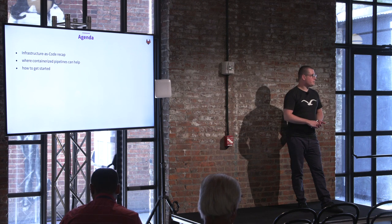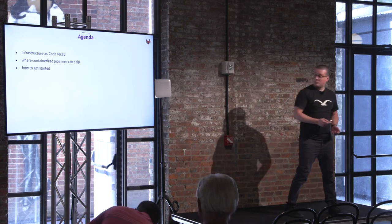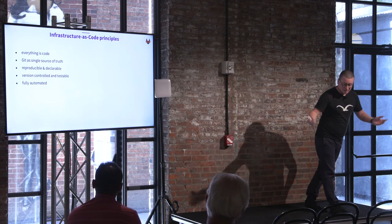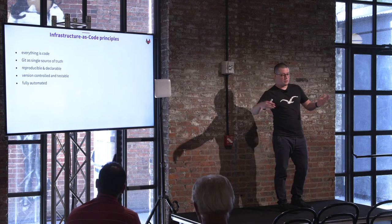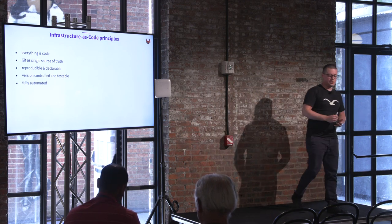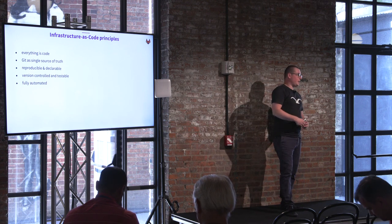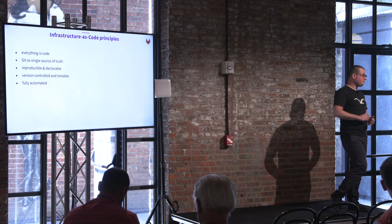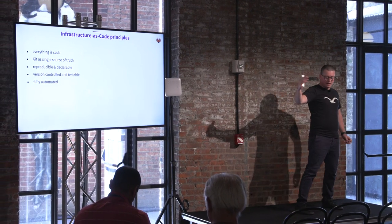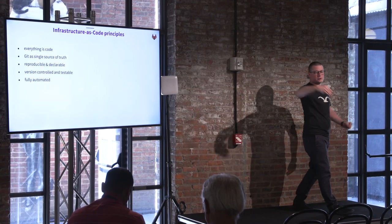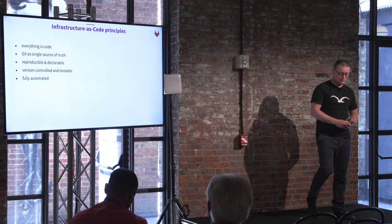Who of you is already using infrastructure as code? And Kubernetes? So we'll do the first slides pretty quick. Infrastructure as code means put everything into code, define everything with code, and put it into your Git repository to be able to version and roll back your stuff. It's important to build code that is reproducible as well as declarable — not defining how things should work, just defining the target and using tools to get there. Of course, it must be version controlled, completely testable, and fully automated.